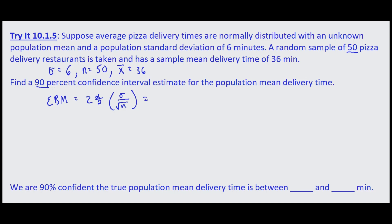So for 90 percent confidence we should know that that value is 1.645 for our z-score. The standard deviation is 6. The sample size now is 50, so the square root of 50.